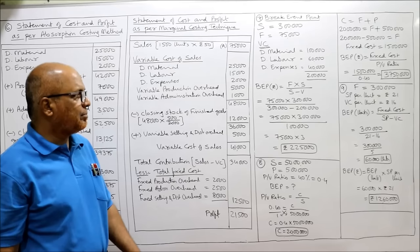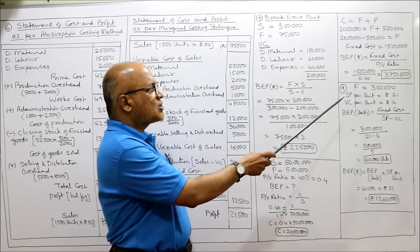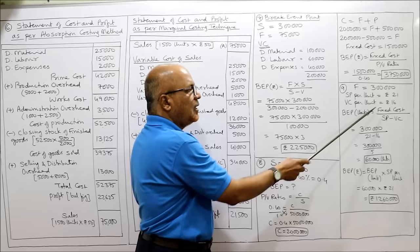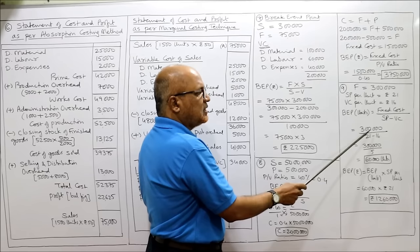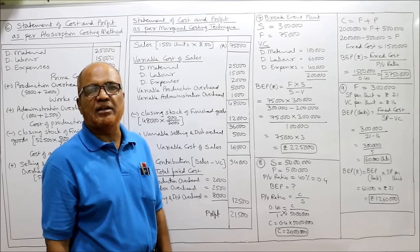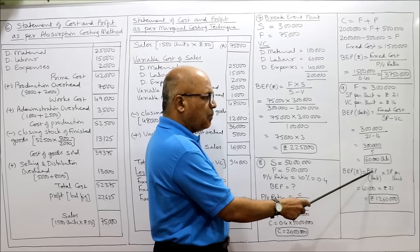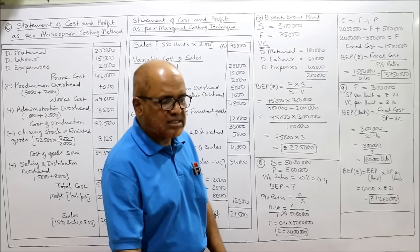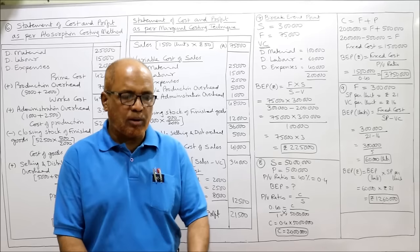Problem 9: calculate break-even point from — fixed cost 3 lakh, selling price per unit 21 rupees, variable cost per unit 16 rupees. BEP in units = fixed cost / (SP − VC) = 3,00,000 / (21 − 16) = 3,00,000 / 5 = 60,000 units. BEP in rupees = 60,000 units × 21 = 12,60,000 rupees. Nine problems on marginal costing completed.